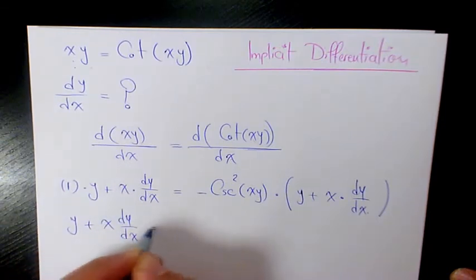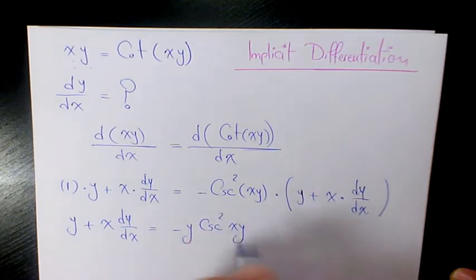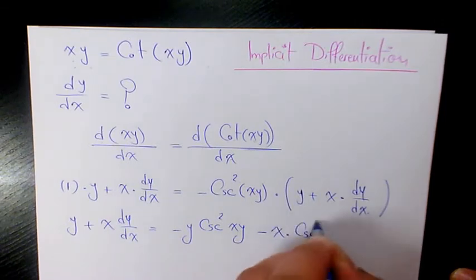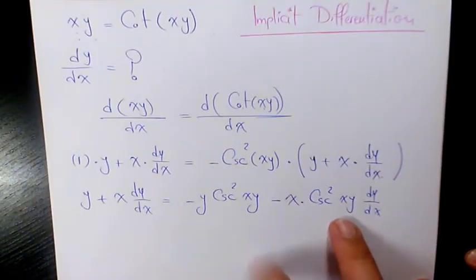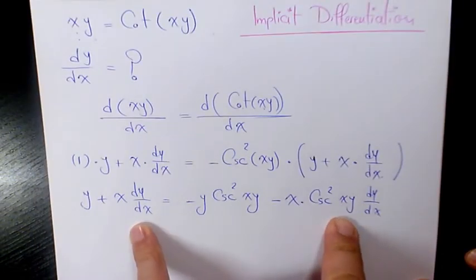Minus x cosecant squared xy dy over dx. Then these two terms have dy over dx. I need to keep them on one side, the left hand side, and bring this one to the right hand side.